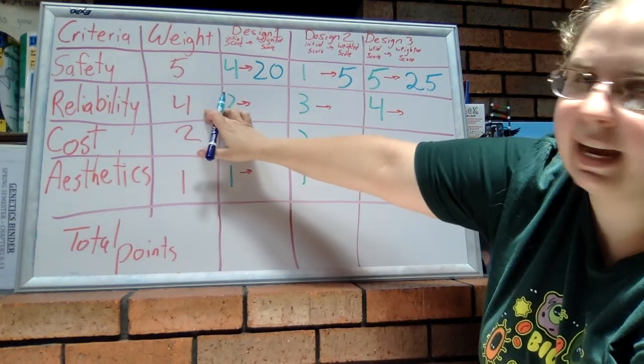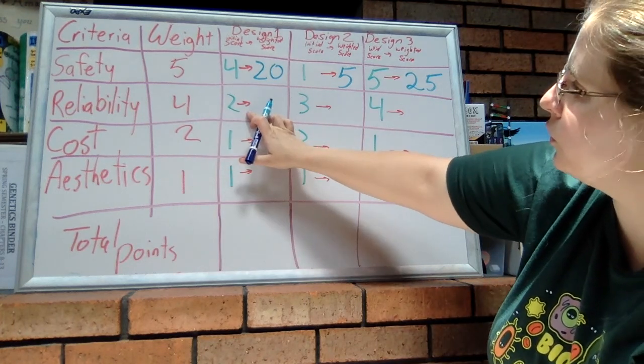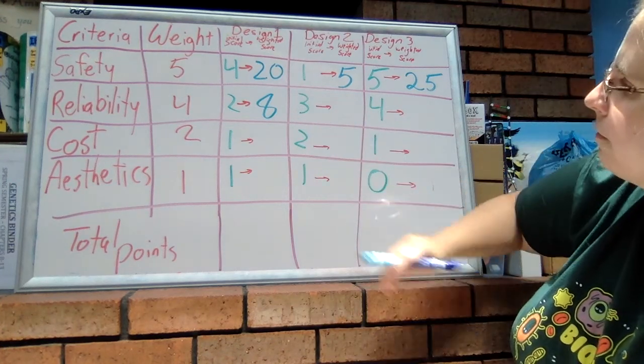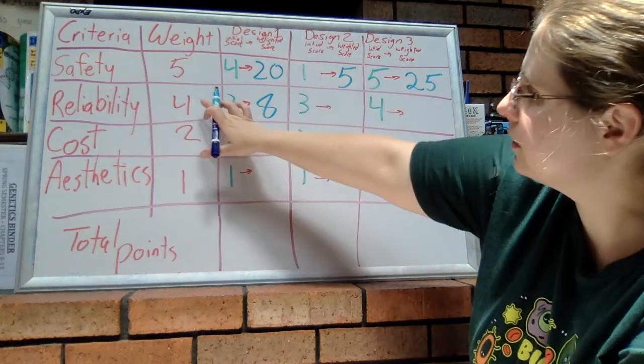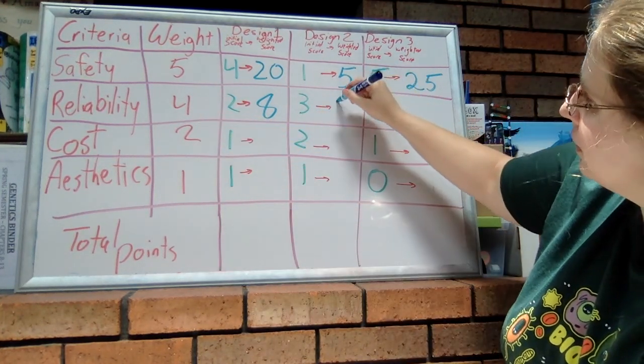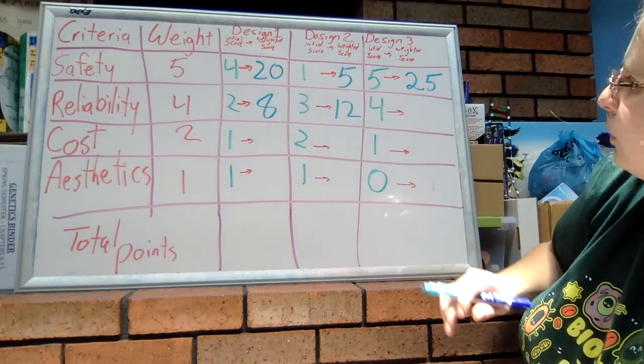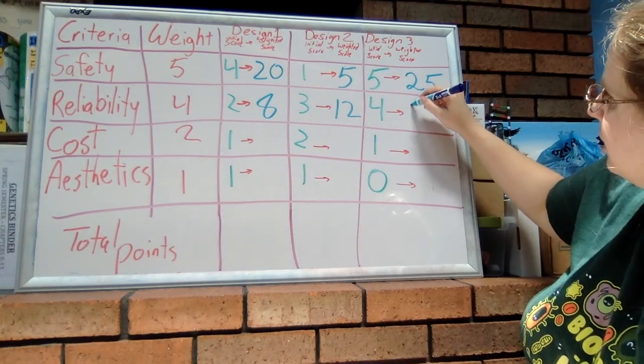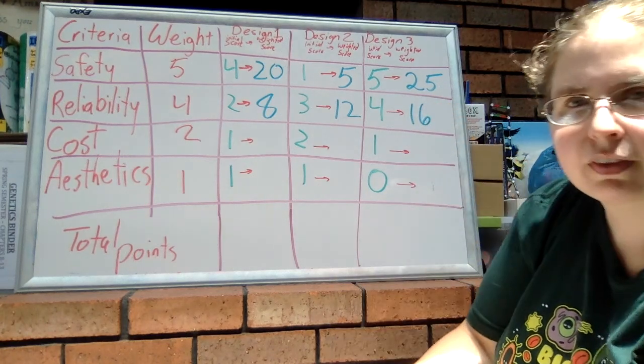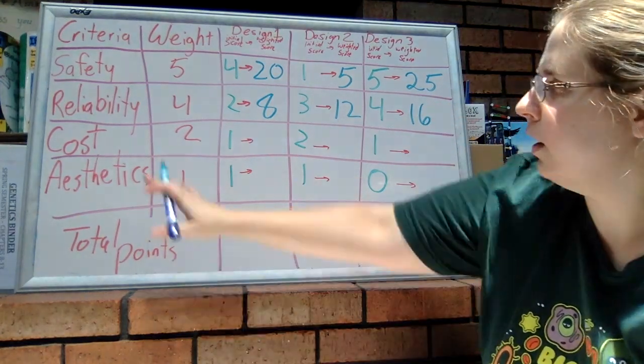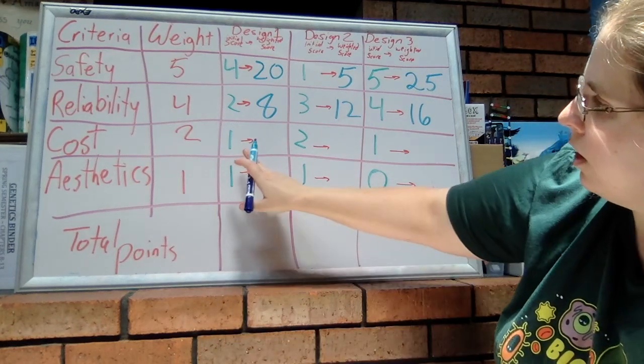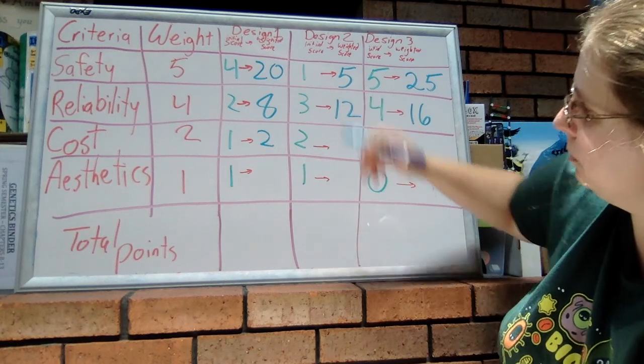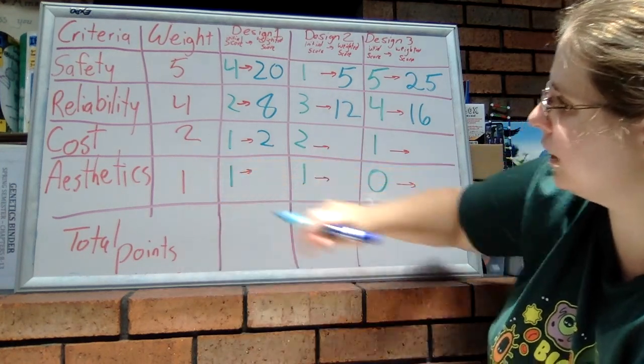All right, reliability had a weight of four, so two times four is eight, three times four is twelve, four times four is sixteen.